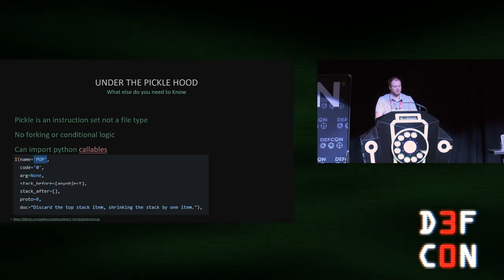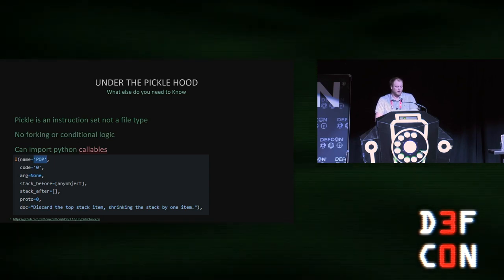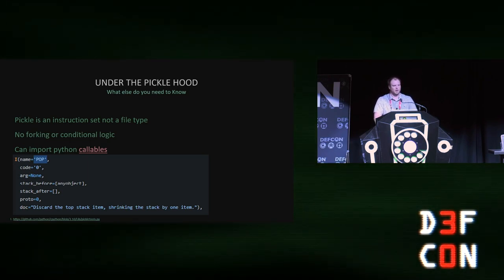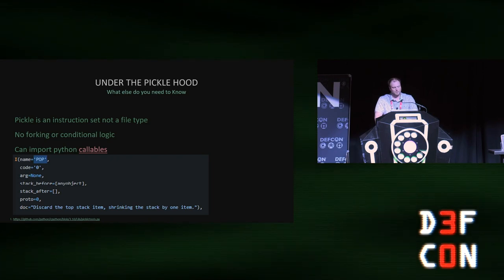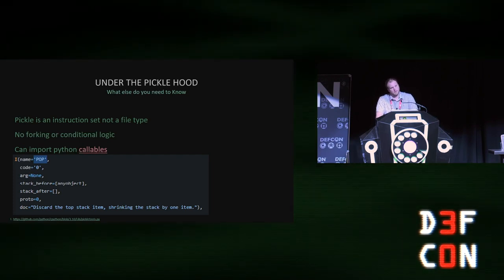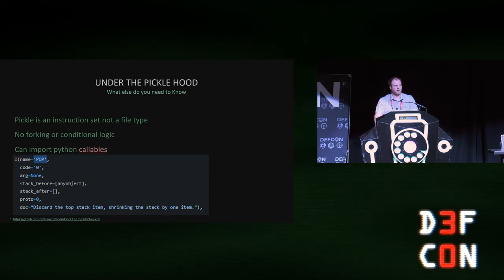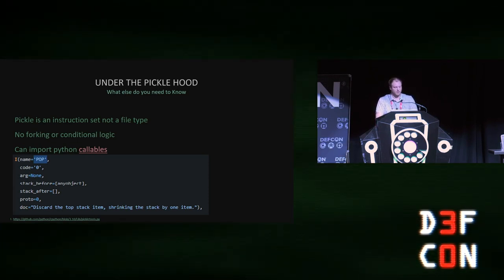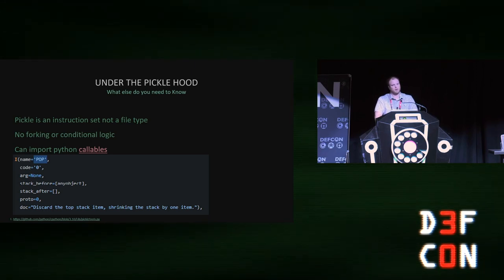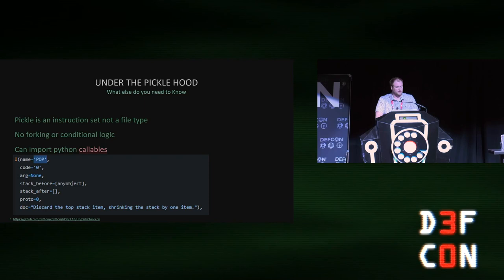A few more things about pickles: pickles are an instruction set, not a file type. For detection, this matters because pickle doesn't have any magic bytes you can detect to identify it, and there's no specific file extension — PyTorch uses .pth and not everything is .pkl. NumPy's .npz format sometimes has pickles and sometimes it doesn't. Also, there's no forking or conditional logic, which means we can inject in the middle without worrying about jumping around — byte offsets don't matter, you can just add code in. You can import any Python callable; pickle actually imports the subprocess module and gets the function for you. And there's an instruction called POP that takes a value and discards it.